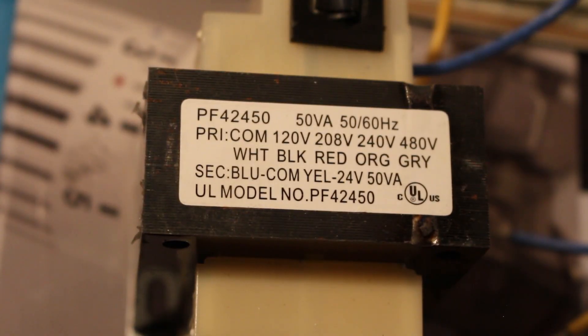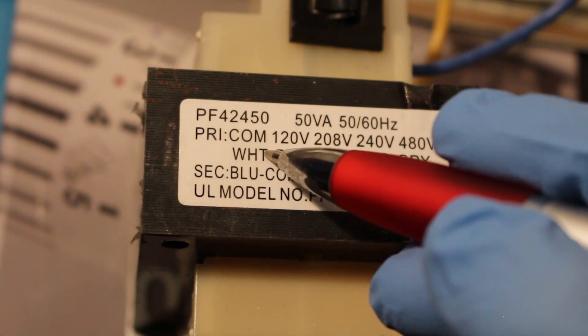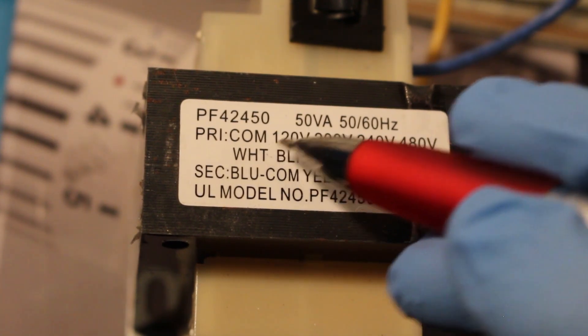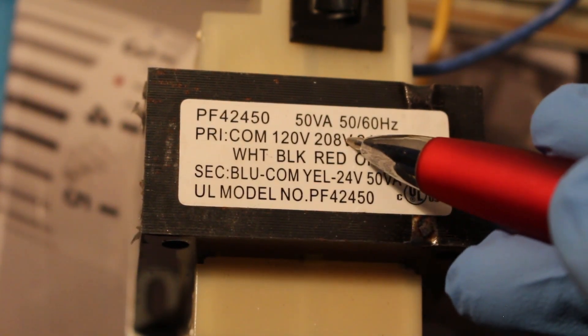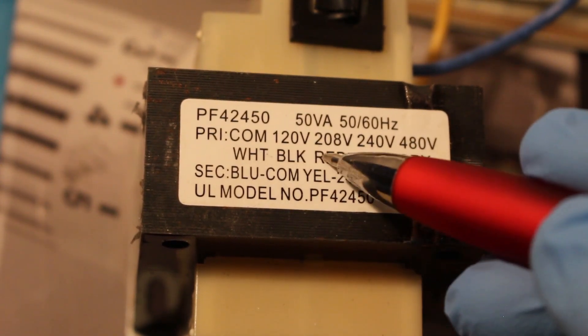So let's say your incoming power was 208 and your secondary voltage needed to be 24 volts. The way this would be wired is you would take your common wire which is white and you will go over to 208 and see which color represents that, which is red.